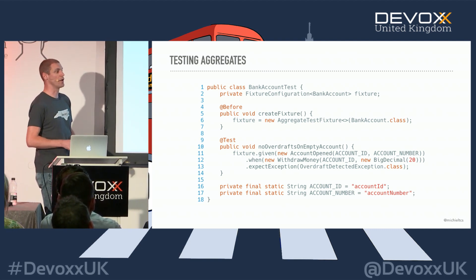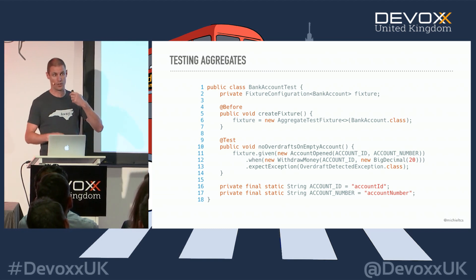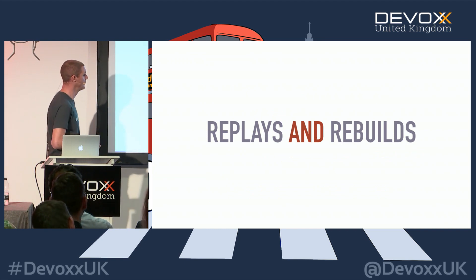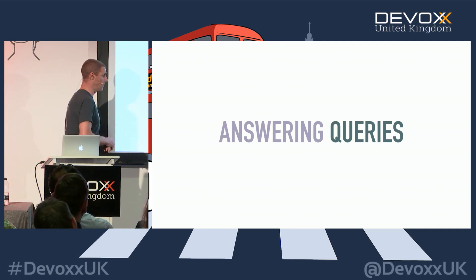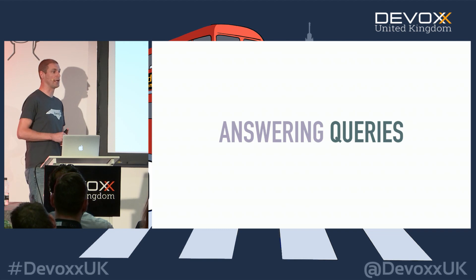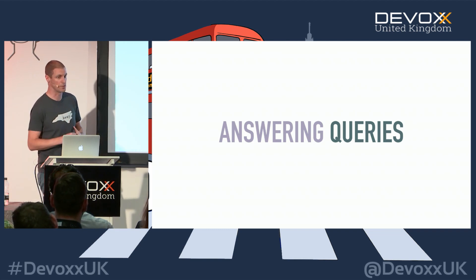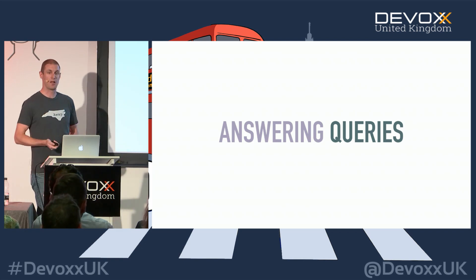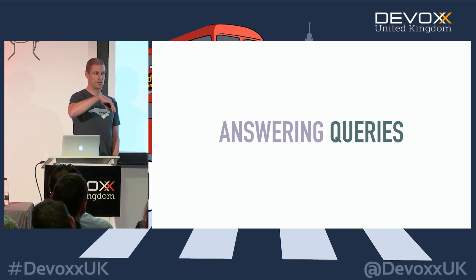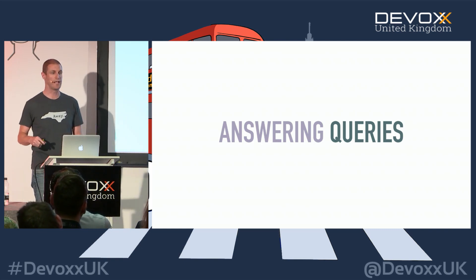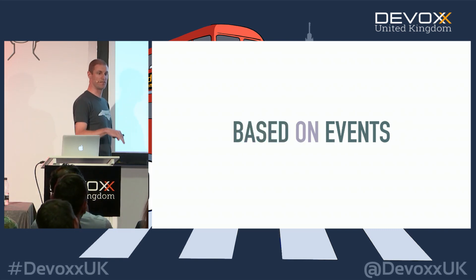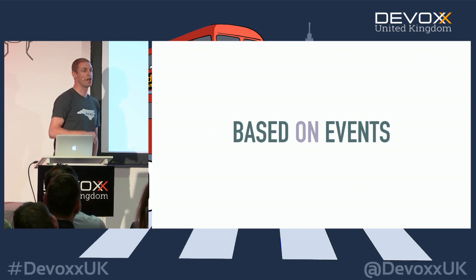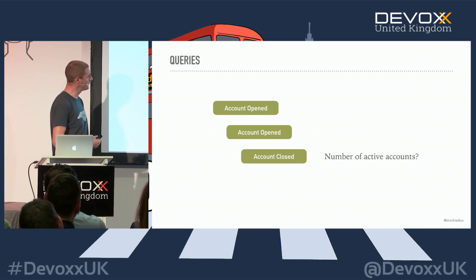Let's get on to one of the bigger challenges in applying event sourcing and CQRS: replaying and rebuilding of query models. Assume someone wants to answer a query, and the nice thing about event sourcing — especially if you've been in production for a while — is that we have all this historical data. We can base that query on existing events, all the transactions we've recorded so far.